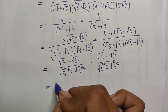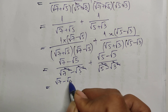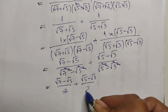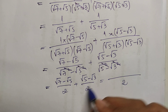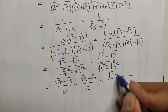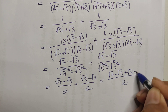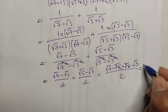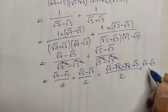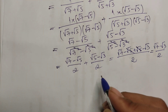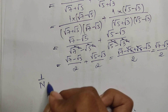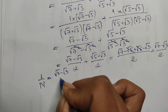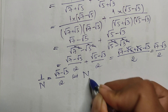So we get (√7 − √5)/2 plus (√5 − √3)/2. Combining over a common denominator of 2: (√7 − √5 + √5 − √3)/2. The √5 terms cancel, giving us 1/n = (√7 − √3)/2.